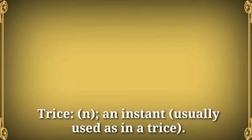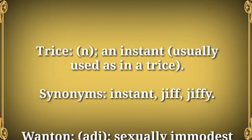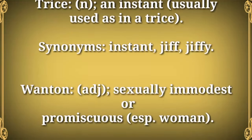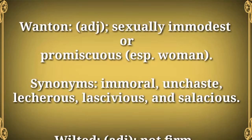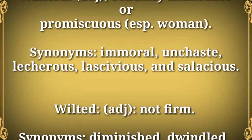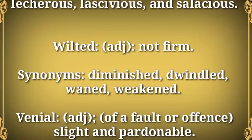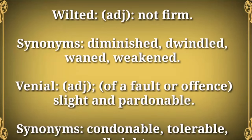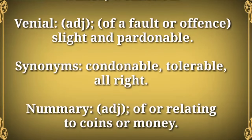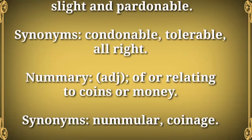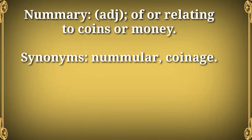Peroration (n) — the concluding part of a speech. Synonyms: conclusion, summation, recapitulation, epilogue. Trice (n) — an instant, usually used as 'in a trice.' Synonyms: instant, jiff, jiffy. Wanton (adj) — sexually immodest or promiscuous, especially of a woman. Synonyms: immoral, unchaste, lecherous, lascivious, and salacious. Wilted (adj) — not firm. Synonyms: diminished, dwindled, waned, weakened. Venial (adj) — of a fault or offense: slight and pardonable. Synonyms: condonable, tolerable, all right.